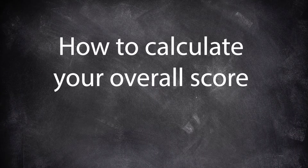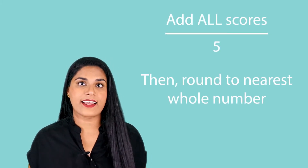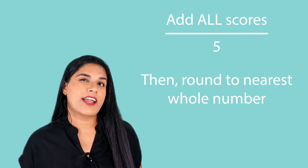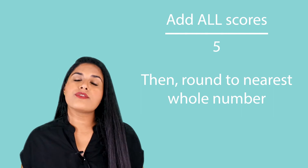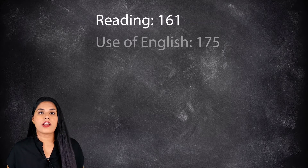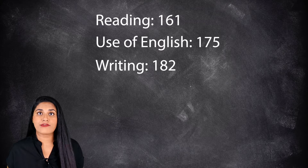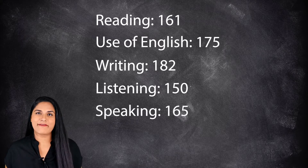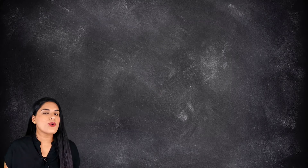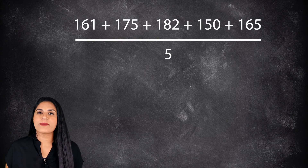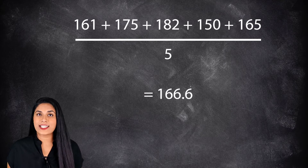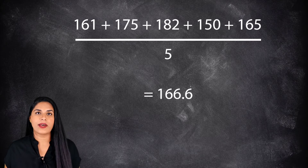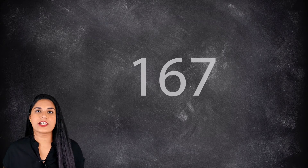How to calculate your overall score? Your overall score is calculated by adding all of the individual scores together and dividing by 5, and then rounding to the nearest whole number. So for example, imagine you get 161 for reading, 175 for use of English, 182 for writing, 150 for listening, and 165 for speaking. You add all of those numbers together and divide the answer by 5. I got 166.6, so round up to the nearest whole number and you get an overall score of 167.